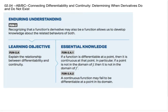This is AP AB and BC Calc. We are doing Unit 2, Section 4, which is connecting differentiability and continuity, and we're determining when derivatives do and do not exist.